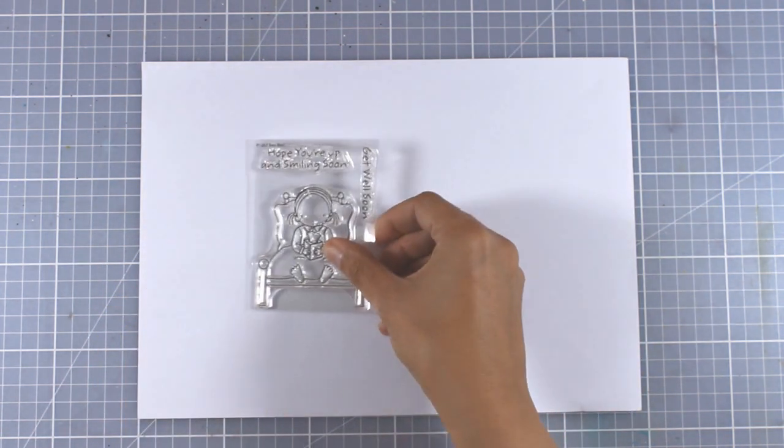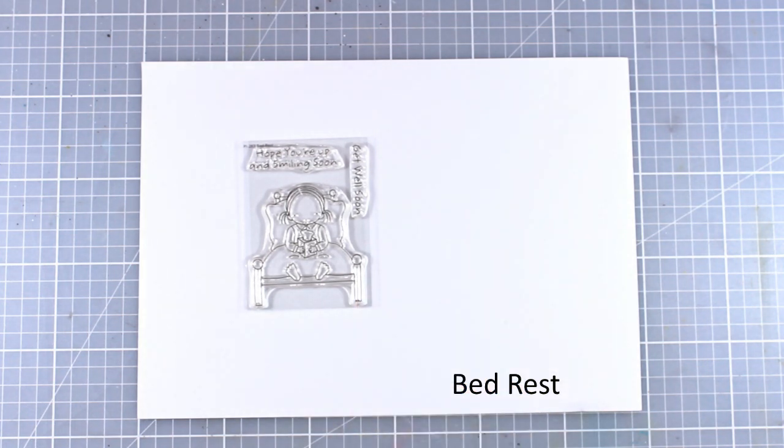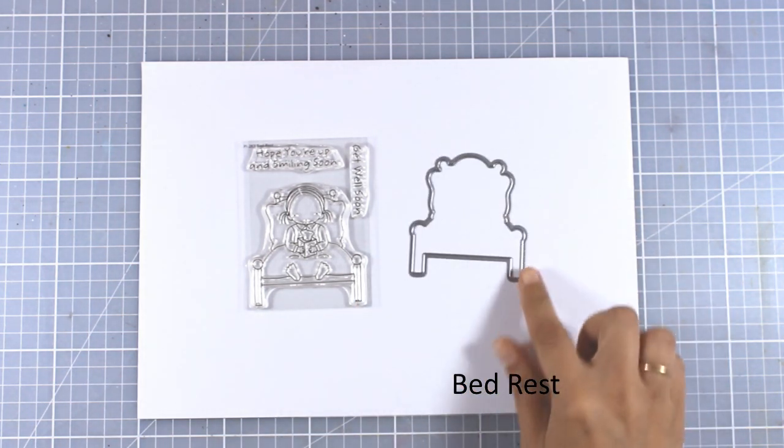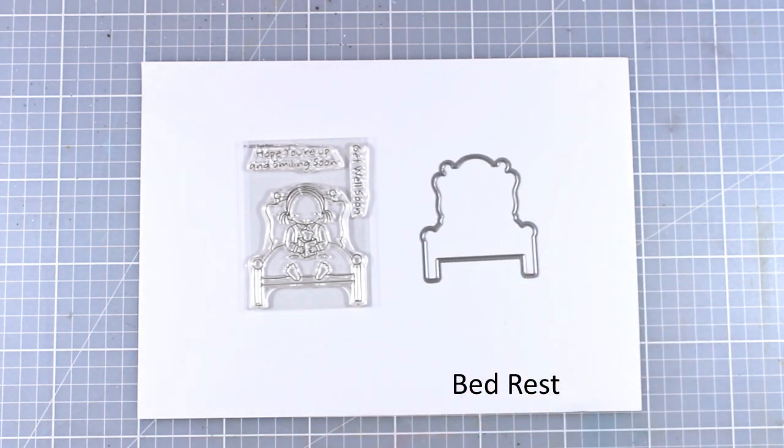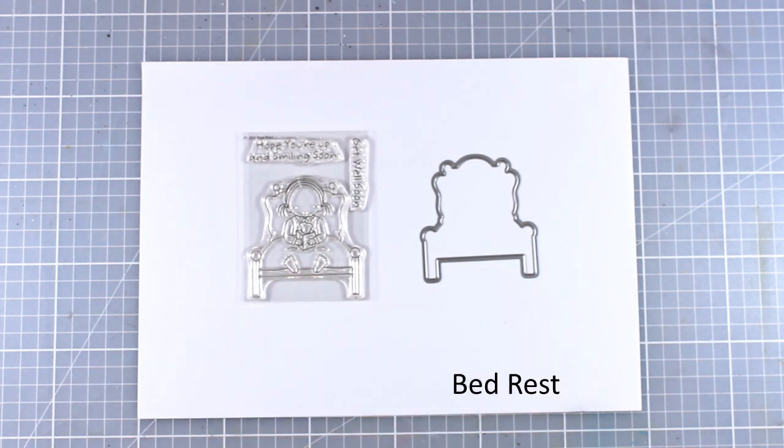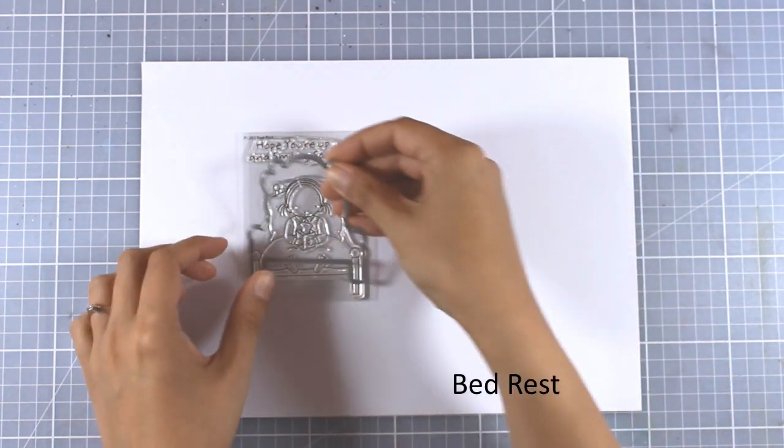The little girl is back again this month for a stamp set perfect for get well cards. She is on her bed this time, and there are sentiments such as get well soon and hope you are up and smiling soon.